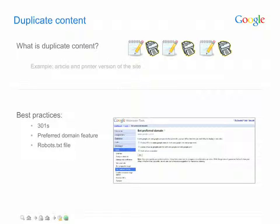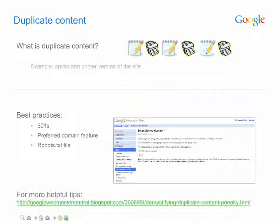If you're syndicating your content, you may wish to ask your partners to include a link on each of their pages back to the original source on your domain. And lastly, if you find someone copying your site and you want it removed from Google's search results, you can file a Digital Millennium Copyright Act notice, otherwise known as a DMCA takedown request. For additional tips, check out the Webmaster Central blog post referenced here.